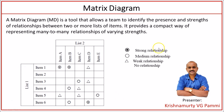What you see here is a matrix diagram. It consists of two dimensions: list 1 and list 2. List 1 consists of a related group of items — item 1 to item 6 — and list 2 is listed on a different dimension, consisting of related items item A to item E. Between these two lists, we want to see whether any relationship exists.